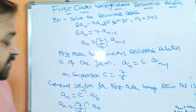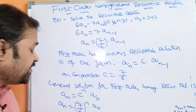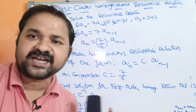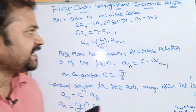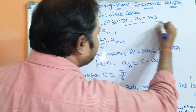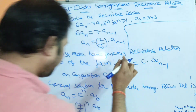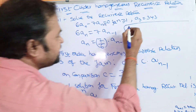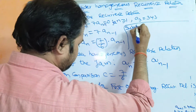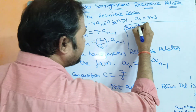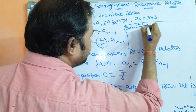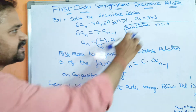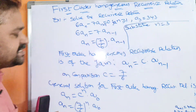We don't know the value of A0. To find it, we use the given condition A3 = 343. Substituting N = 3: A3 = (7/6)^3 · A0.